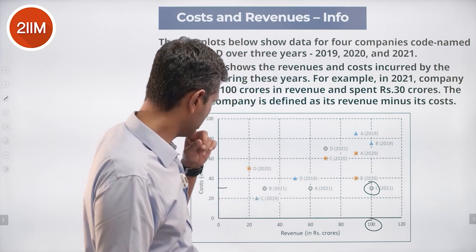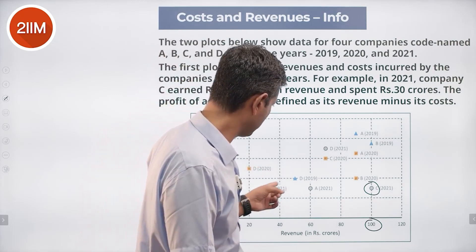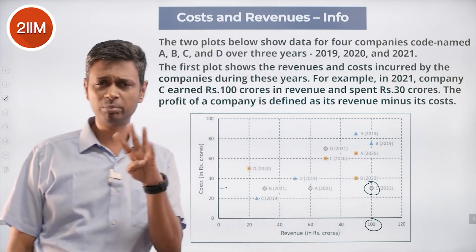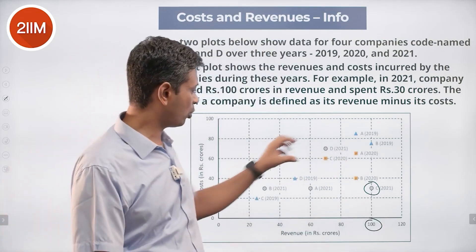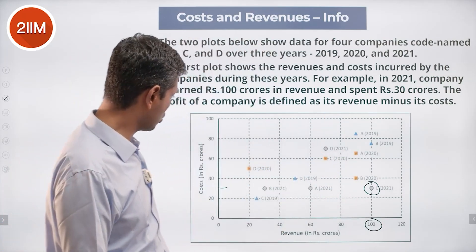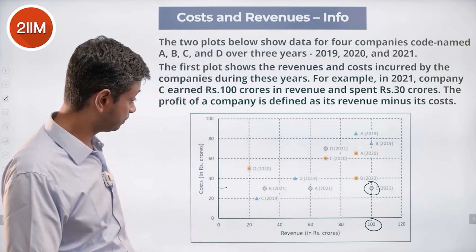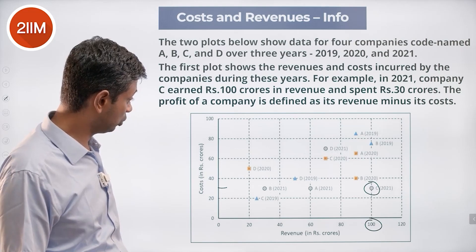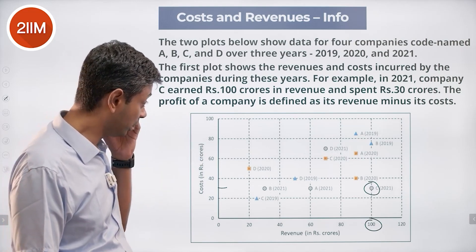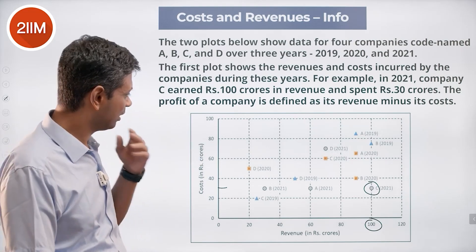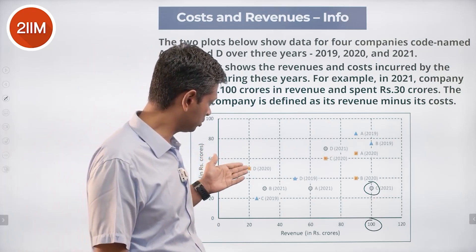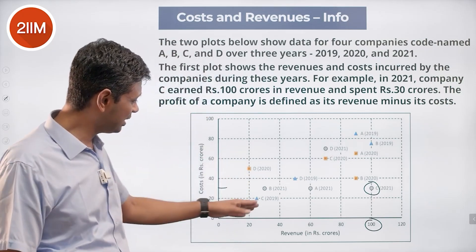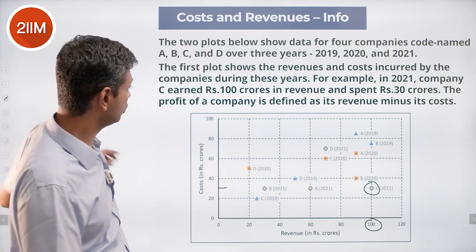There are four companies and three years, so it should be 12 points here. The color coding is by year: 2019 is blue, 2020 is orange, 2021 is gray. Blue goes with triangle, orange goes with square, and gray goes with circle, and the company names are mentioned.